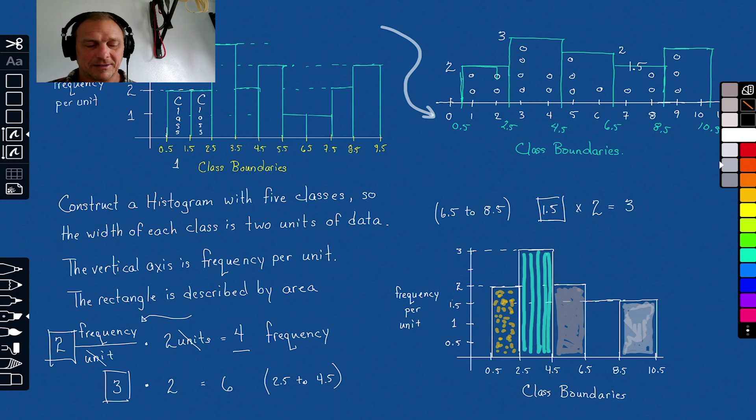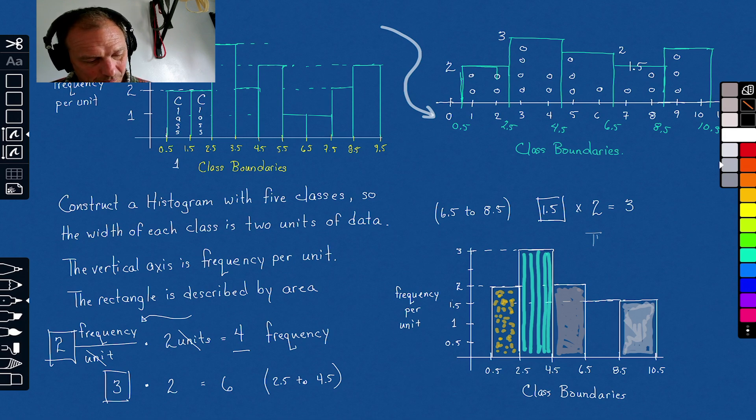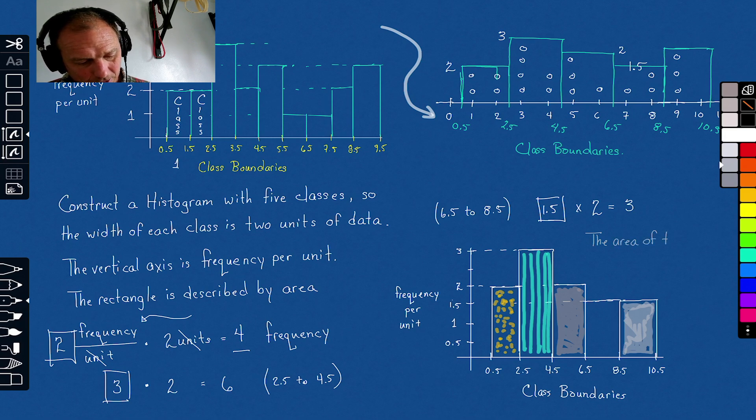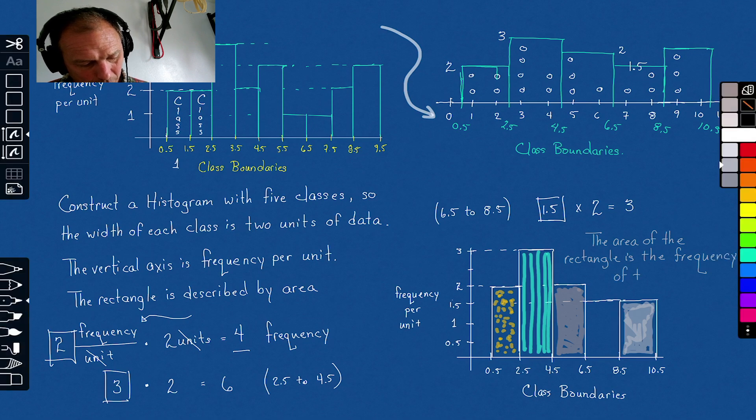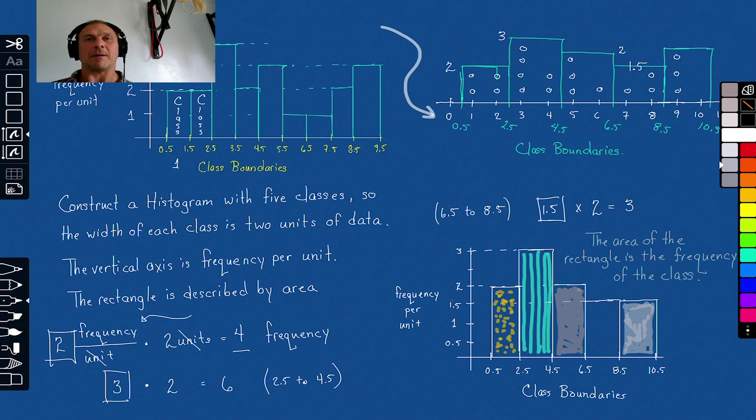Now, here's the beauty of these. The area. This is the key takeaway. It's so important that I need to write it. The area of the rectangle is the frequency of the class. That's it. That's your big takeaway. Memorize that. I think you'll be fine.